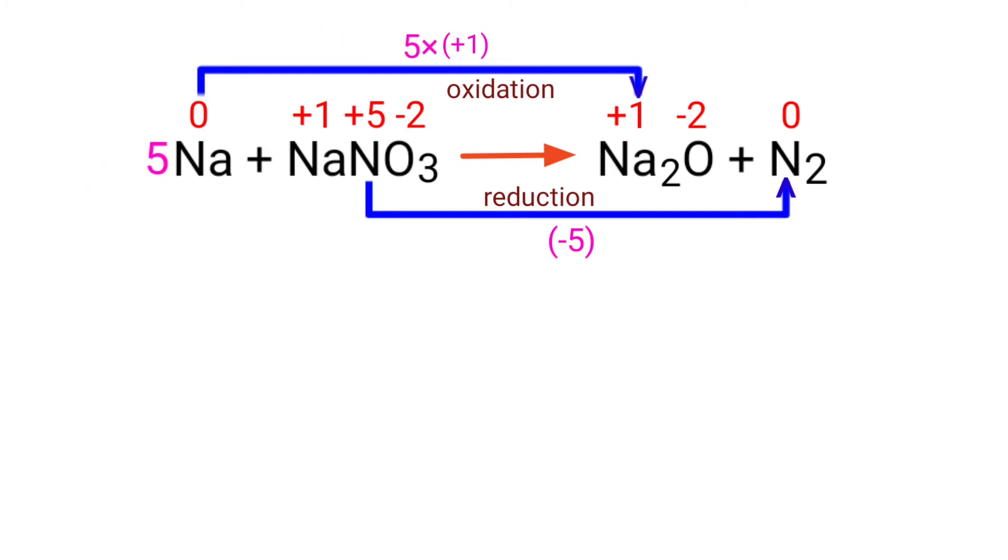Now you can write the equation as 5Na plus NaNO3 gives us Na2O plus N2.